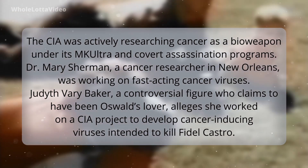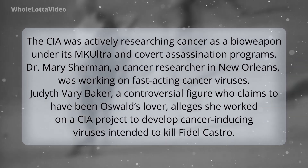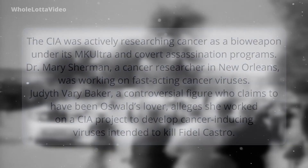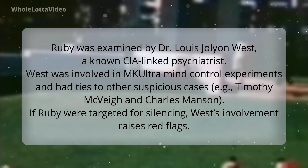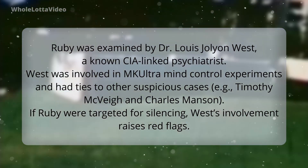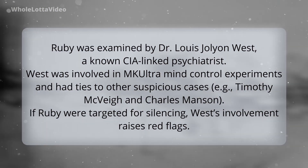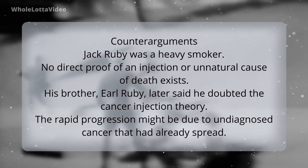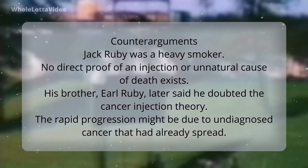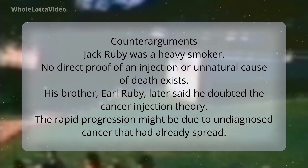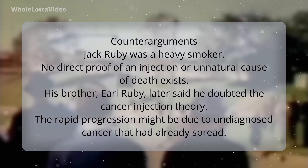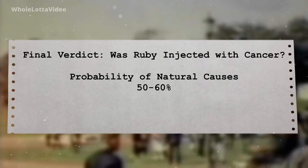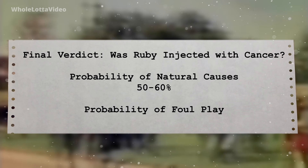The CIA was actively researching cancer as a bioweapon under its MK-ULTRA and covert assassination programs. Dr. Mary Sherman, a cancer researcher in New Orleans, was working on fast-acting cancer viruses. Judith Vary Baker, a controversial figure who claims to have been Oswald's lover, alleges she worked on a CIA project to develop cancer-inducing viruses intended to kill Fidel Castro. Ruby was examined by Dr. Louis Jolyon West, a known CIA-linked psychiatrist involved in MK-ULTRA mind-control experiments, who also had ties to the cases of Timothy McVeigh and Charles Manson. Counter-arguments: Ruby was a heavy smoker, no direct proof of an injection exists, and his brother Earl Ruby doubted the theory. Final verdict — probability of natural causes: 50–60%; probability of foul play: 40–50%.